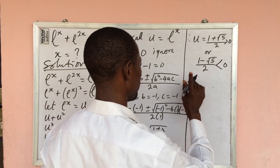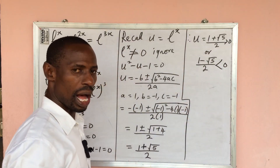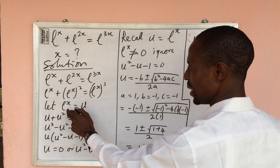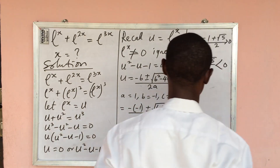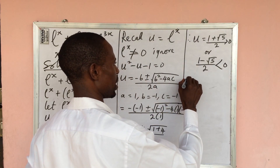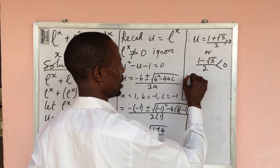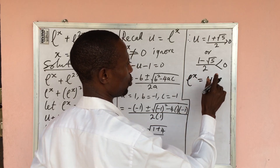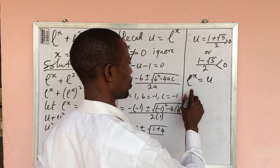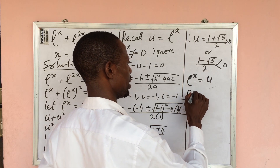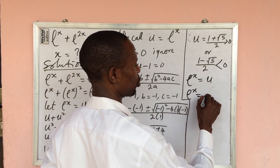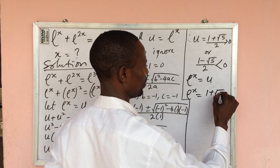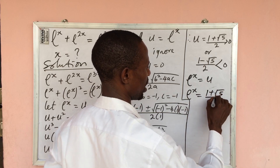Recalling our substitution where we let e to the power of x equal to u, we now substitute back. So e to the power of x equals 1 plus root 5, all over 2.